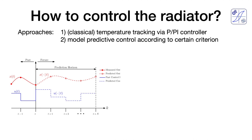The question is how to use the model for control. A classical approach is a simple PI controller tracking a certain temperature. But that's not what we want here, because if we stay at a constant indoor temperature we can't use the thermal capability of the building. Because of that, we want to use a different approach: model predictive control.